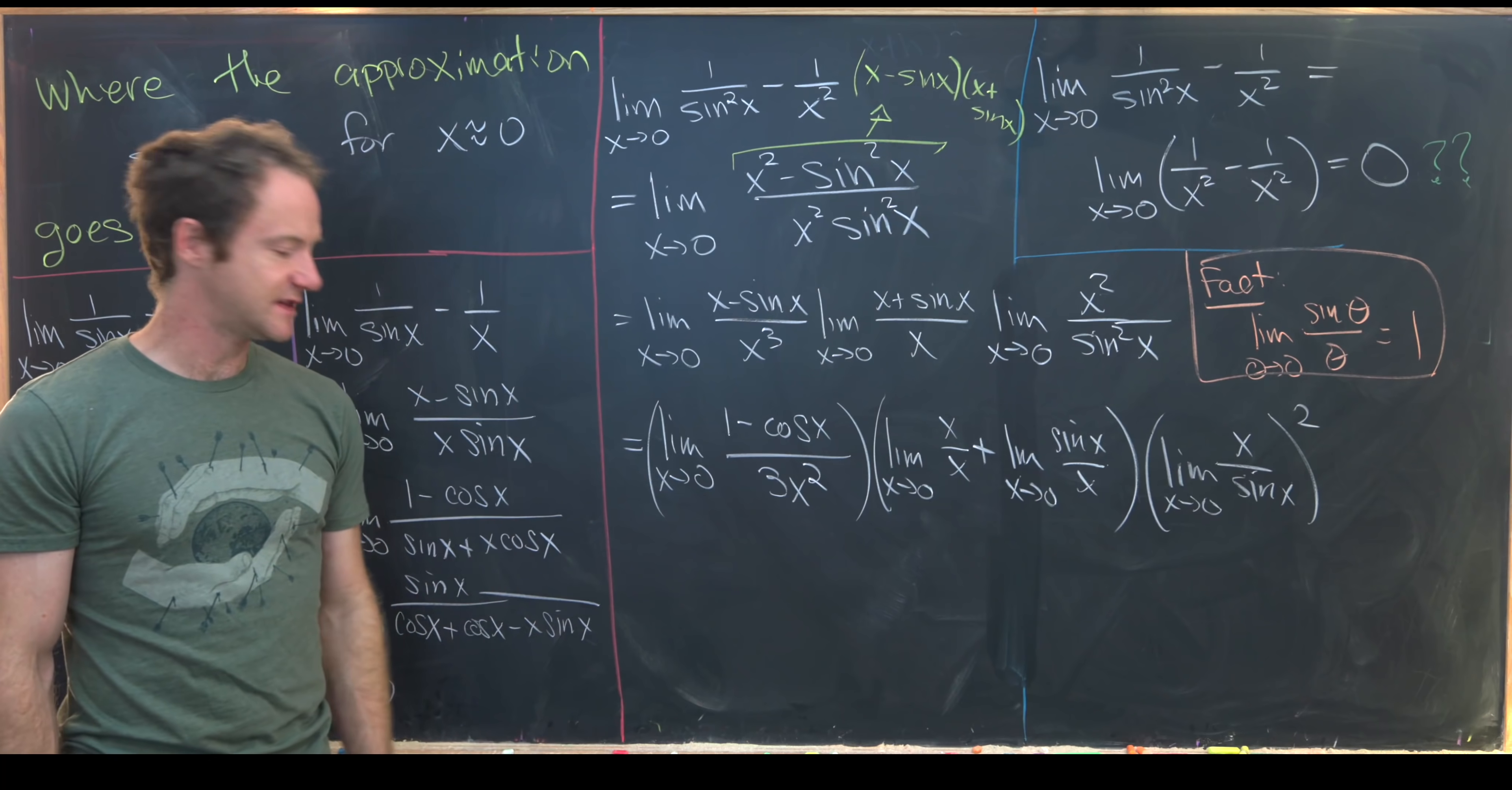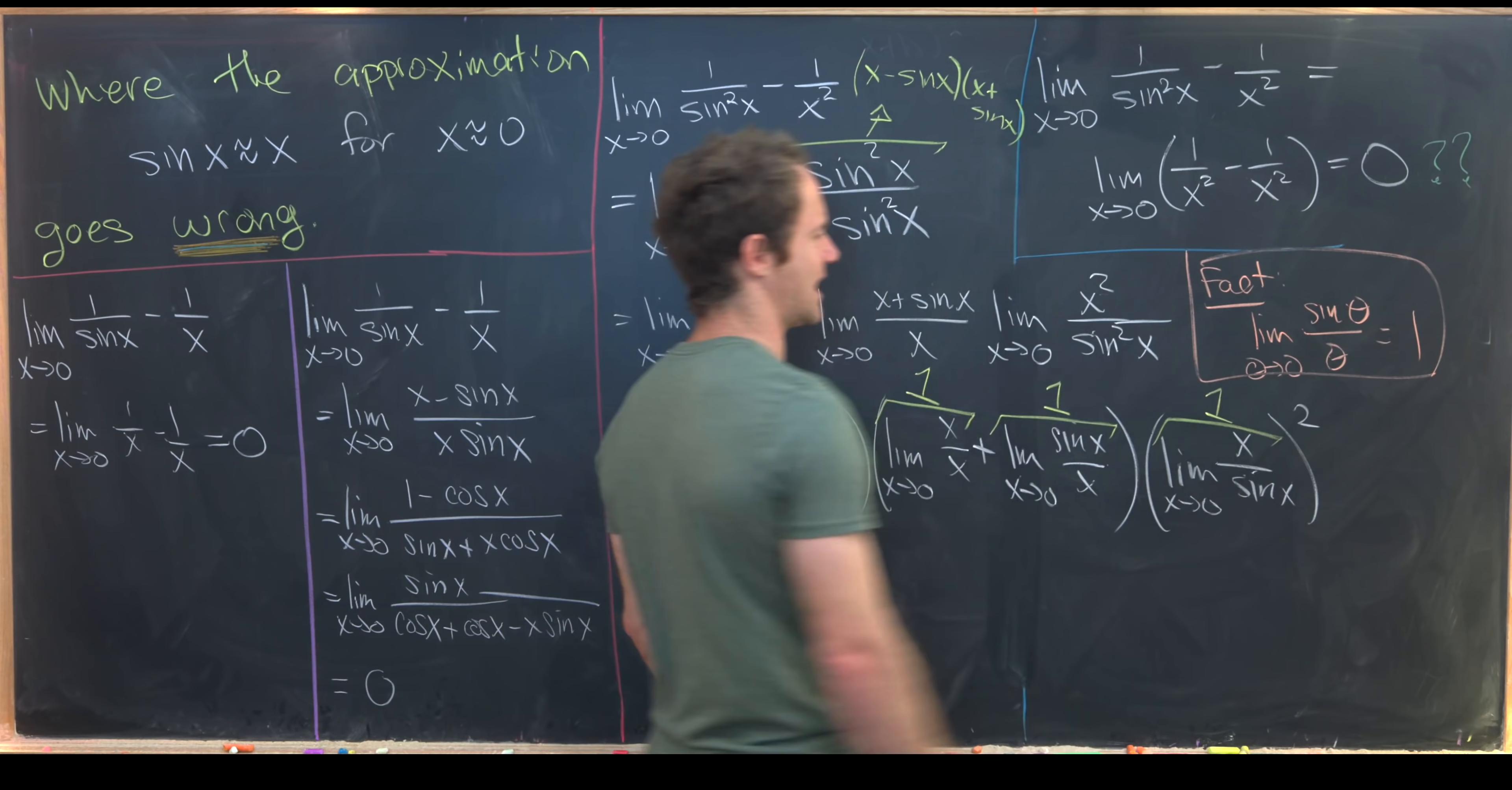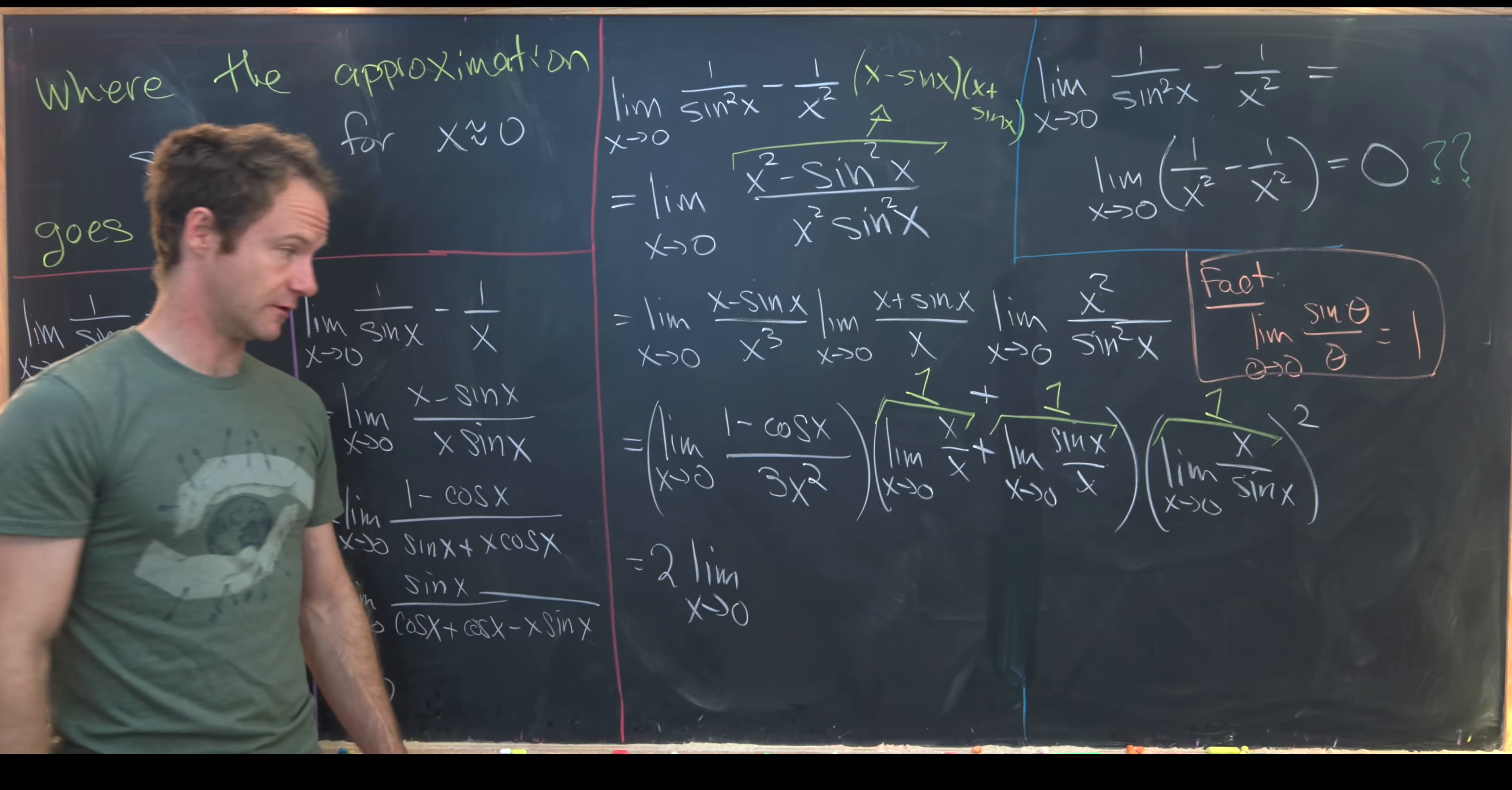So now let's look at these limits that we know already. So this limit right here is most definitely equal to one because x over x is one. This limit right here is equal to one by our fact. And then this limit right here is also equal to one by the reciprocal version of our fact. So what do we have? We have one plus one times one. So right now we have a two.